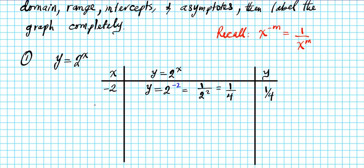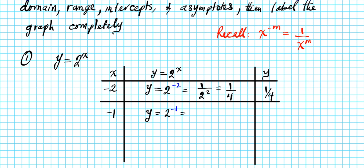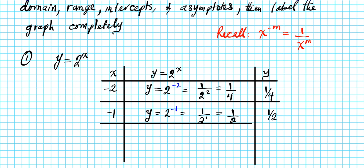Let's move on to the next input value, which is negative 1. What is our output when x is negative 1? We follow the same procedure: input negative 1 for x and apply the reciprocal property of exponents. We reciprocate the term to yield 1 over 2 to the first power, which is 1 over 2. So our output when x is negative 1 is positive one half.